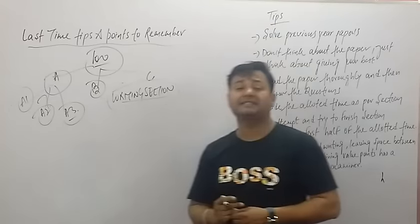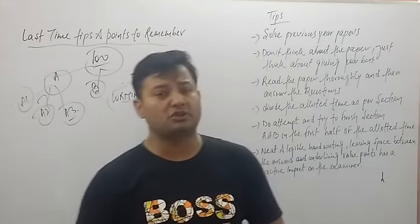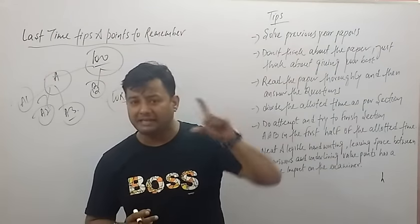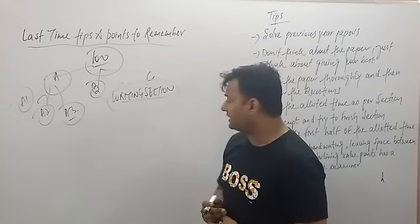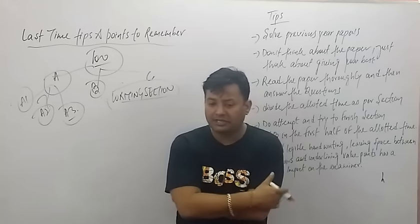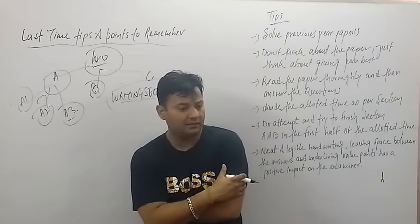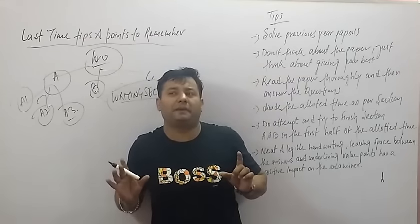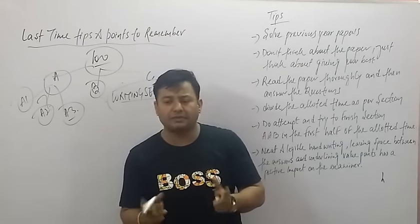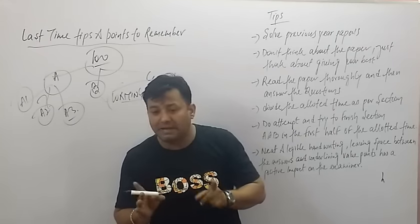The key for Section B — especially for those working towards 95-plus in English — is accuracy, balance, and consistency. For Section B, you need to prepare yourself for notice, advertisement, poster, invitation, and replies. Prepare for at least the notice and the poster. Don't rely only on options — go for each and every topic. You must be master of everything, as nobody knows what will come in the paper.